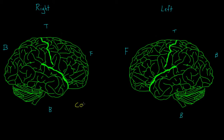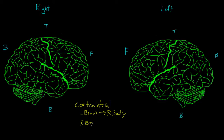The first thing that I want to talk about is contralateral control. And what that means, for the most part, is that the left side of the brain controls the right side of the body, and vice versa. So the right side of the brain controls the left side of the body.